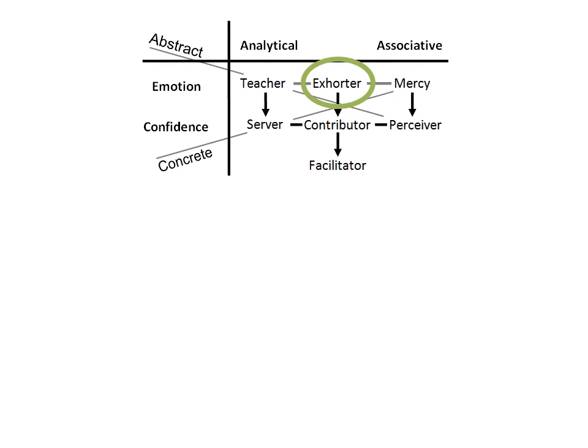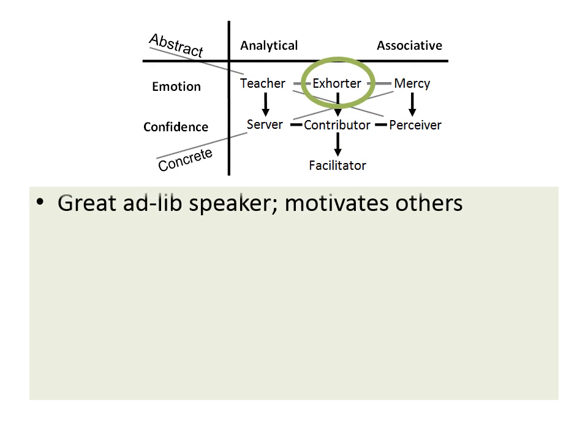Turning now to the three composite styles: the exhorter is a combination of teacher and mercy. We looked at teacher, server, mercy, and perceiver — the four simple styles — which deal with content and handle the various elements of linguistics. The structure and processing of these four simple styles is mostly responsible for Chomsky's universal grammar. The three composite styles use this structure to drive the mind, so one does not find specific language elements here but rather how language is used.